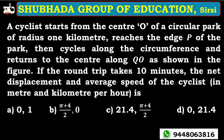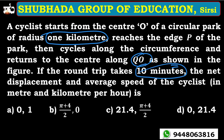We shall go to the next problem now — the third problem. A cyclist starts from the center O of a circular park of radius 1 km. This is a very very important type of problem on displacement and distance relationship. The cyclist reaches the edge P of the park, then cycles along the circumference and returns to the center along Q. If the round trip takes 10 minutes, find the net displacement and average speed in km per hour.